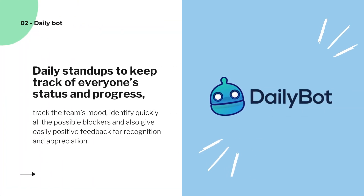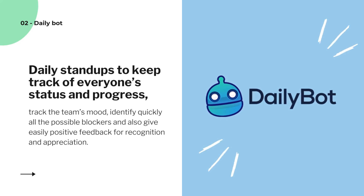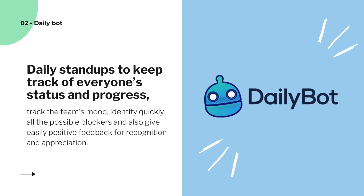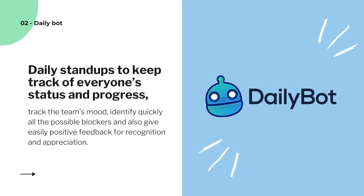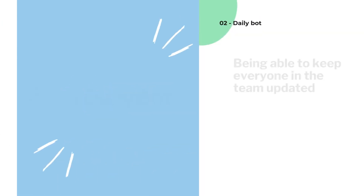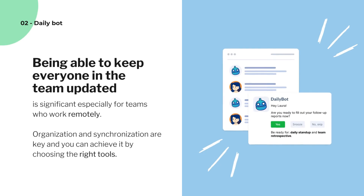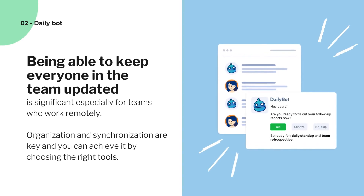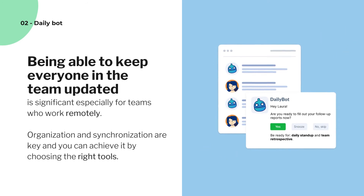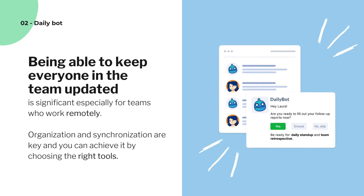Daily Bot offers daily stand-ups to keep track of everyone's status and progress, track the team's mood, identify quickly all the possible blockers, and also give easily positive feedback for recognition and appreciation. Being able to keep everyone in the team updated is significant especially for teams who work remotely. Organization and synchronization are key and you can achieve it by choosing the right tools.